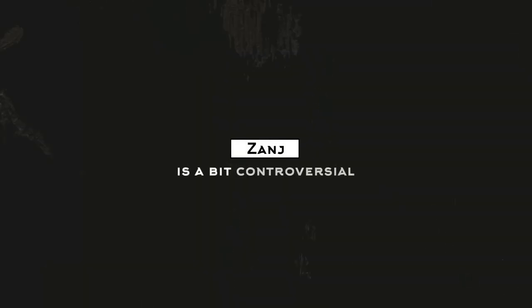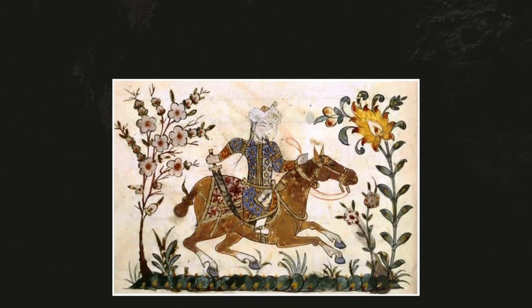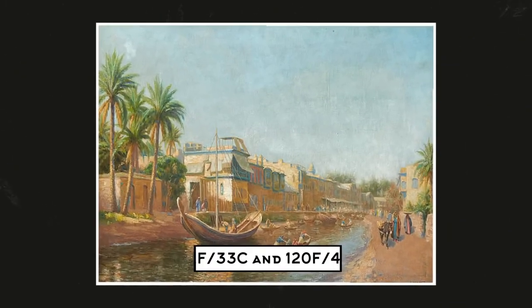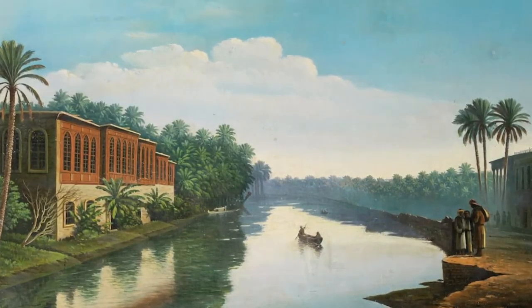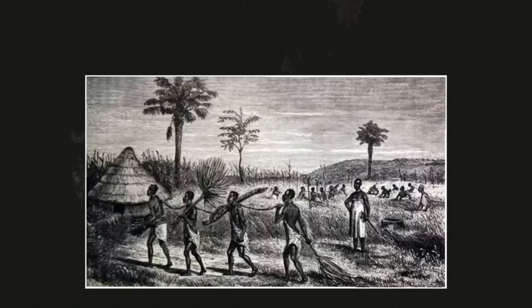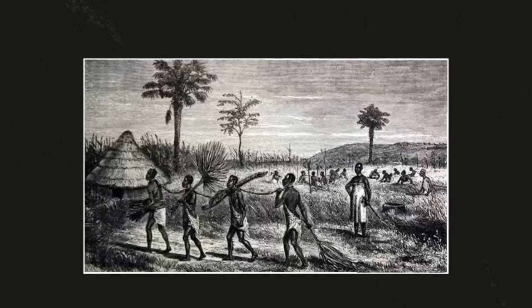Africans did fight back — a case in point being the Zanj Rebellion, a series of revolts that took place between 869 AD and 883 AD near the city of Basra in present-day Iraq. Under the leadership of Ali ibn Muhammad, the Bantu slaves revolted in the thousands against the Abbasid Caliphate. Temperatures in Basra reach as high as 48 degrees Celsius, yet the Zanj slaves were forced to work in the hot, humid marshlands of southern Iraq — the Tigris-Euphrates delta — reclaiming abandoned marshland through intensive labor.